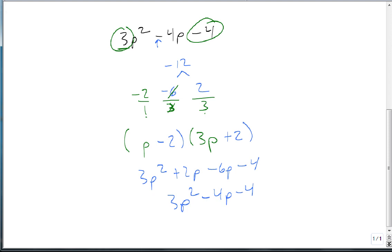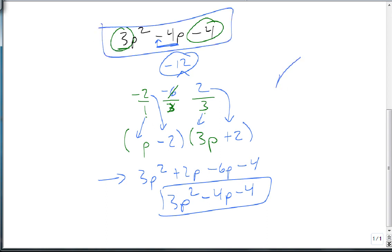And so this is, again, what we call synthetic factoring. First times last. Factor that number, split that number up until it adds up to what's in the middle. Then number on bottom goes in front. Number on top follows after. Write your factors. Check your work. Make sure it matches what you started with. And if it does, then you're done.